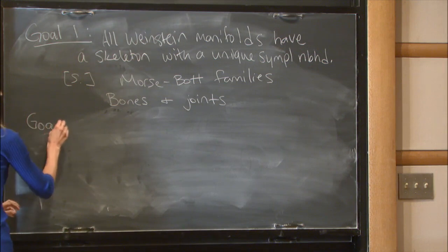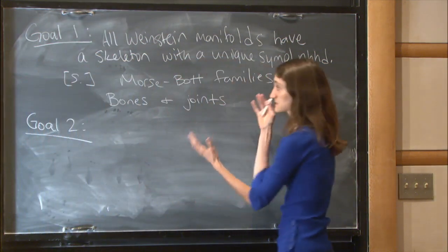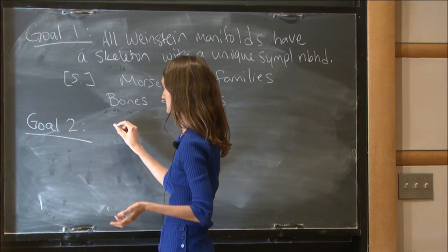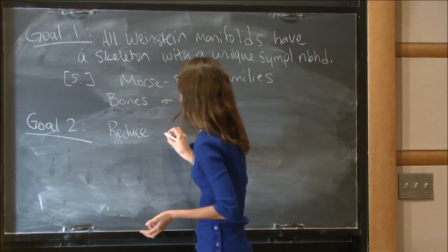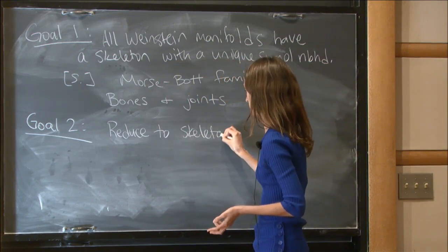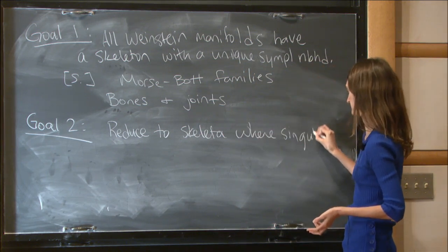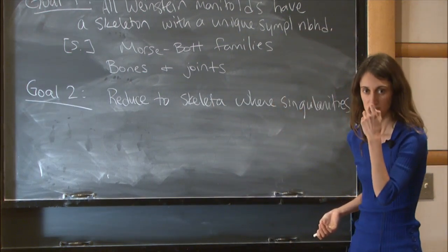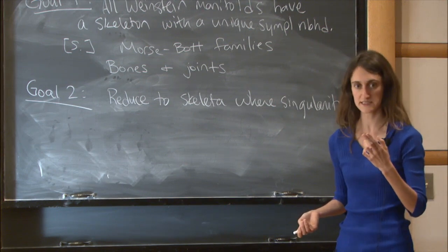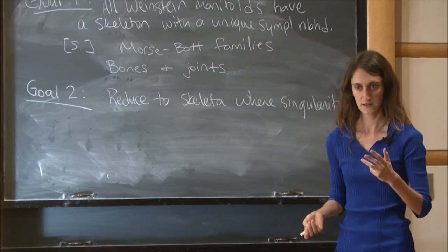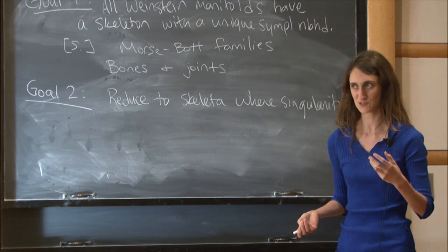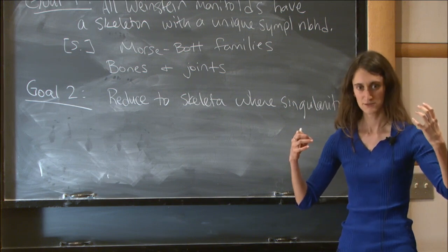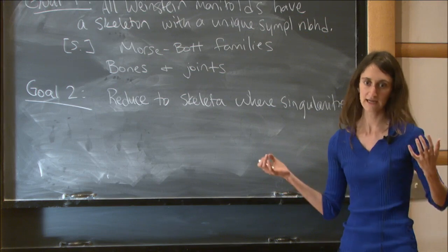The second goal is to take this class of skeletons and refine it further — to reduce to skeletons where the singularities come in finite families. If we have a 2n-dimensional symplectic manifold, the skeleton is at most n-dimensional. My preference is to restrict to manifolds of compact or finite type, so the skeleton is compact, though it could have arbitrary topology.